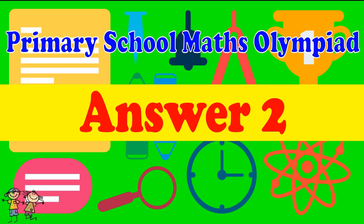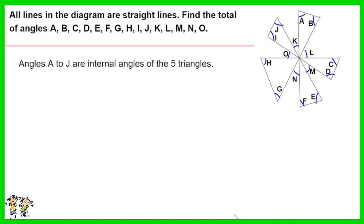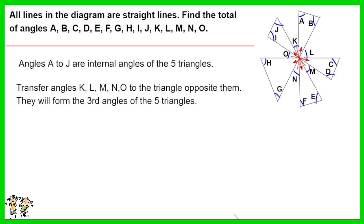Answer for question 2. Angles A to J are internal angles of the 5 triangles. Transfer angles K, L, M, N, O to the triangle opposite them. They will form the third angles of the 5 triangles. As such total angles A to O is total angles of the 5 triangles, which is 5 times 180. The answer is 900 degrees.